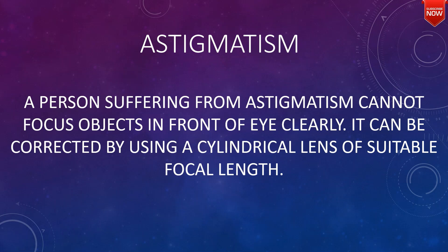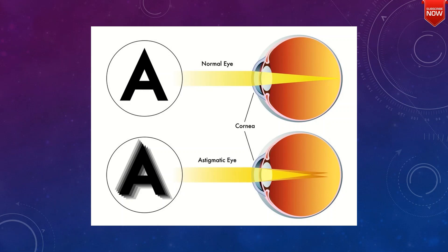A person suffering from astigmatism cannot focus objects in front of the eye clearly. This defect can be corrected by using a cylindrical lens of suitable focal length. In the astigmatic eye, we get a blurred image.